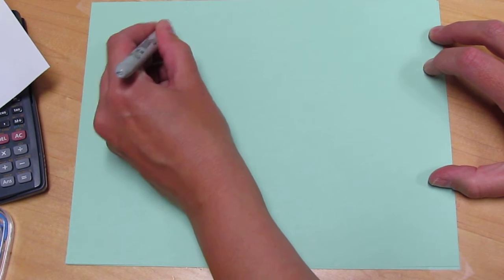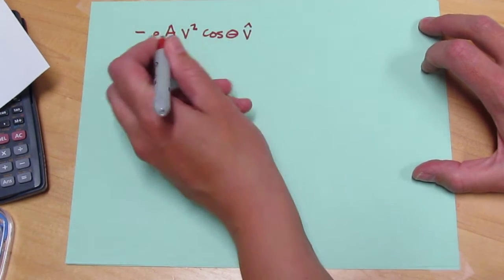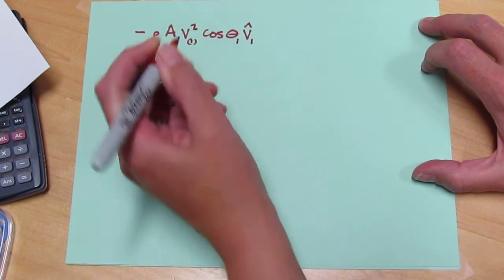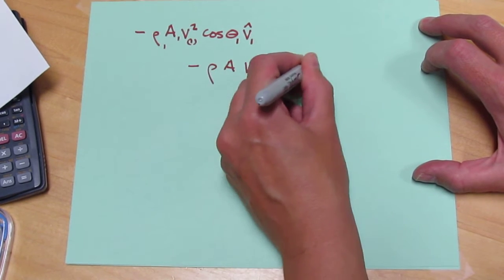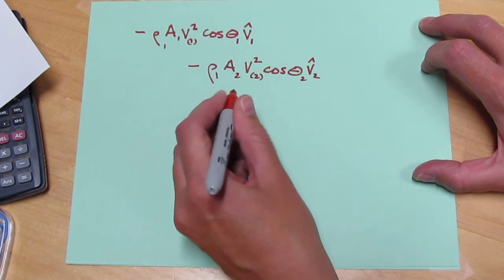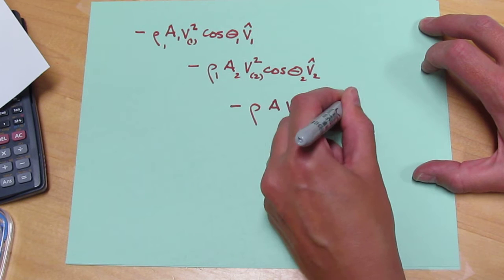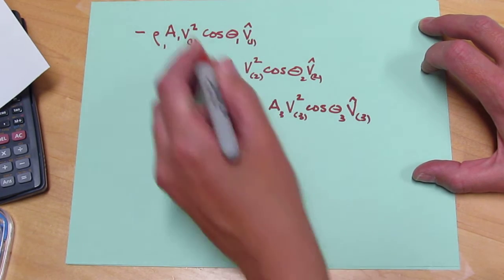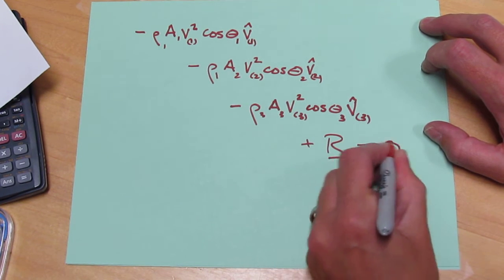So now proceeding with the macroscopic momentum balance, we have minus rho A V squared cosine theta V hat all at the one surface, plus minus rho A V squared cosine theta V hat at the two surface, plus minus rho A V squared cosine theta V hat at the three surface. Those are the three convective terms, plus the force on the wall due to viscosity and other forces equals zero.